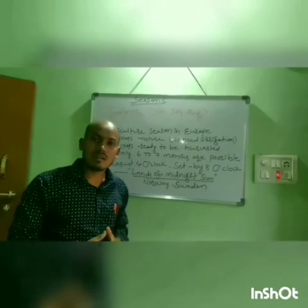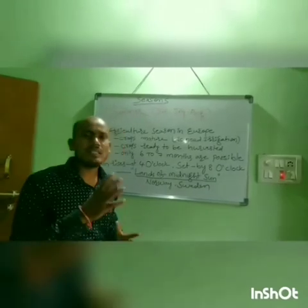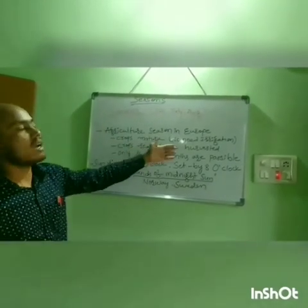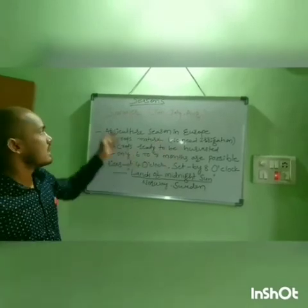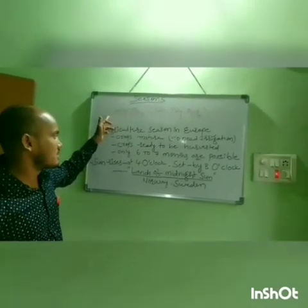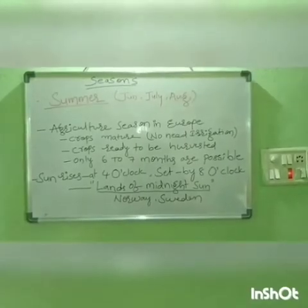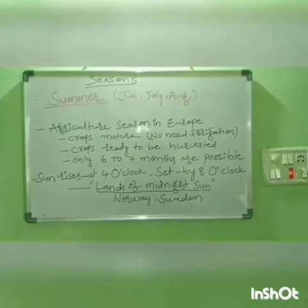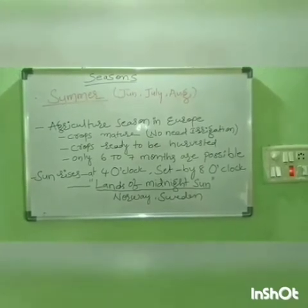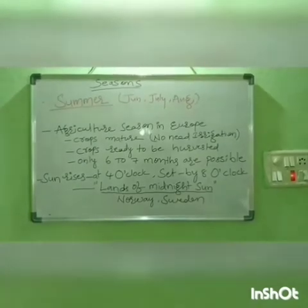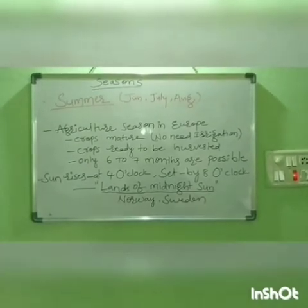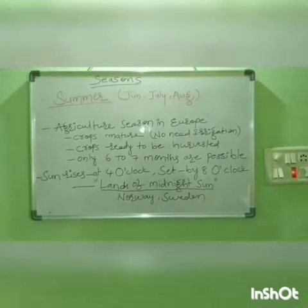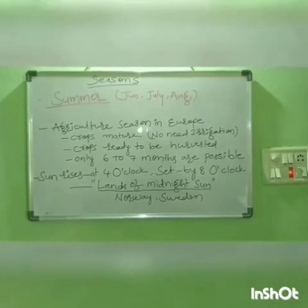There is no need for irrigation because occasional showers are sufficient for the crops. The crops are ready to be harvested at the end of the summer season. In European countries, it is possible only six to seven months for cropping. The sun rises in summer at four o'clock in the morning and sets by eight o'clock in the evening.